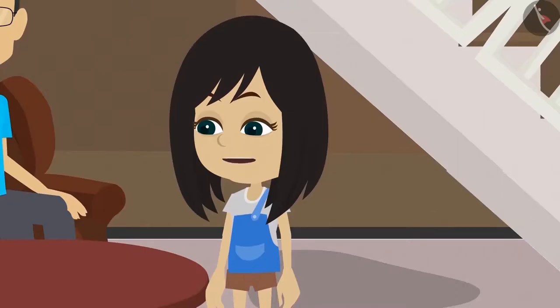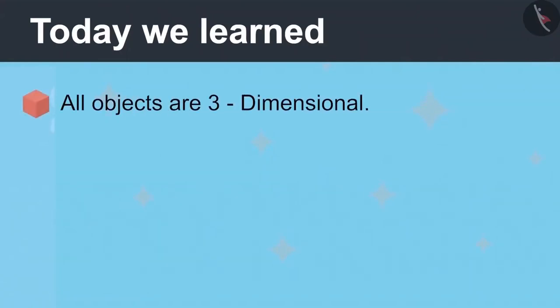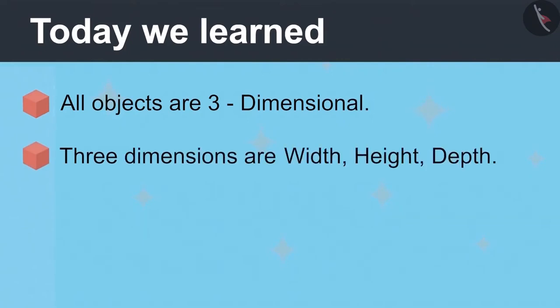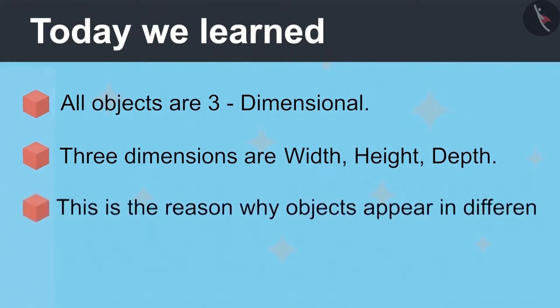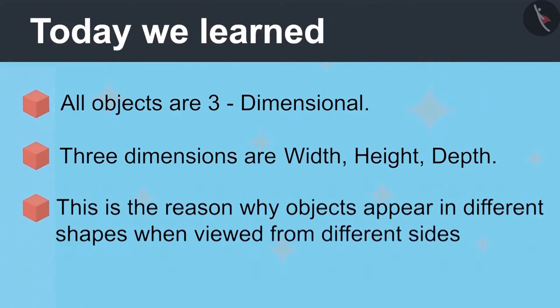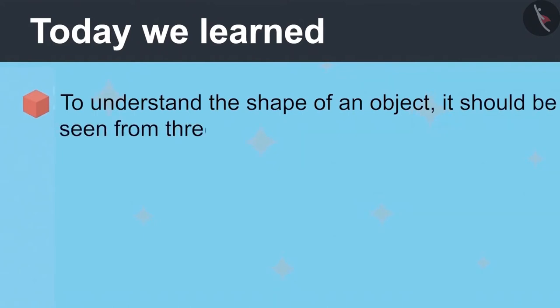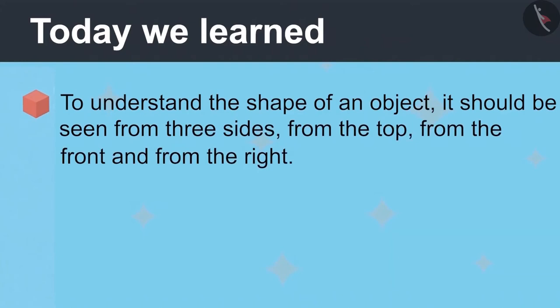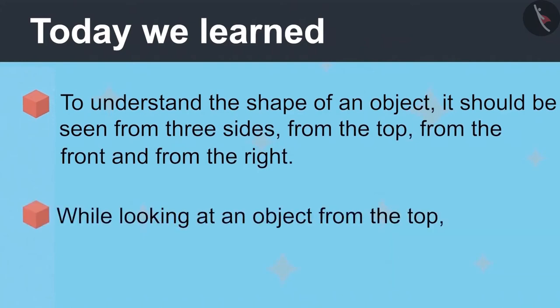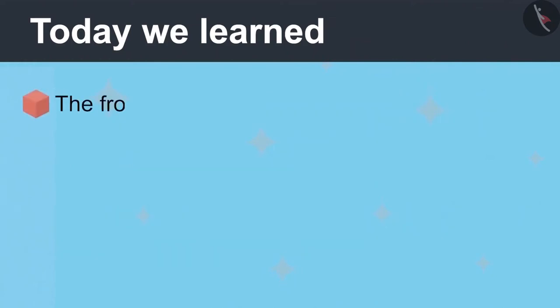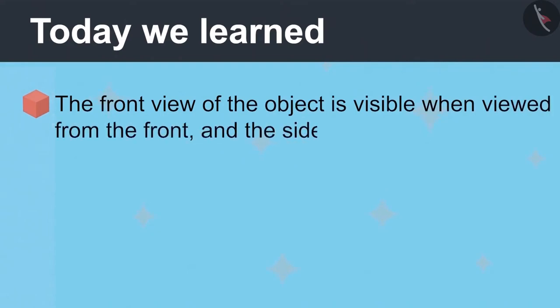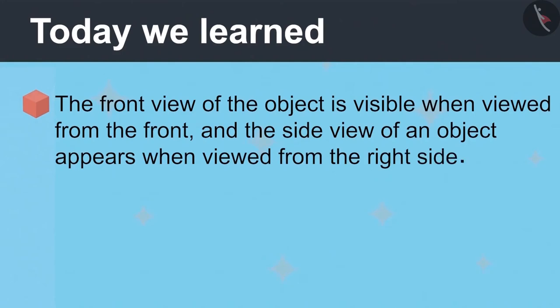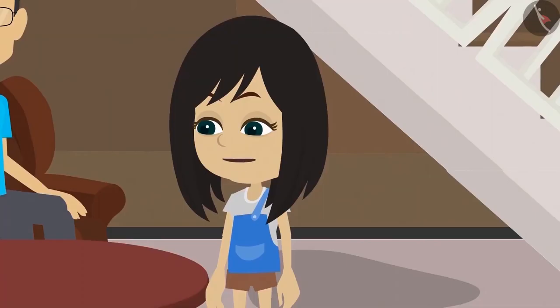Now I have fully understood that all objects are three-dimensional. The three dimensions are width, height, and depth. Because of this, objects appear to be of different shapes when viewed from different sides. To understand the exact shape of an object, one must look at it from three sides: from the top, front, and from the right side. While looking from the top, the top view appears. The front view is visible when viewed from the front. And the side view appears when viewed from the right side. Very well, children. Now you both play and I'll do my work. Okay, Papa. We will go and play and we'll tell everyone about 3D in school tomorrow.